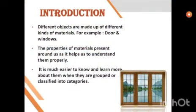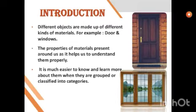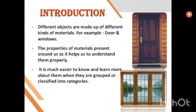Different types of objects are made up of different kinds of materials. For example, a door is made up of wood, whereas the window is made up of glass, steel, iron, etc. The properties of materials present around us help us to understand them properly. It is much easier to know and learn more about them when they are grouped or classified into categories. That is why scientists also categorize various things accordingly.